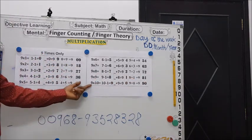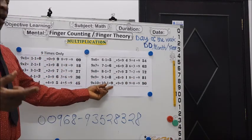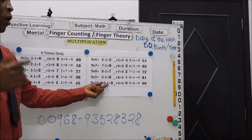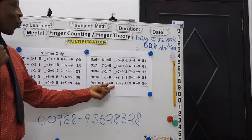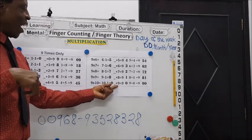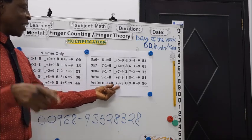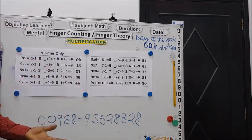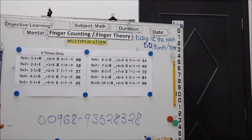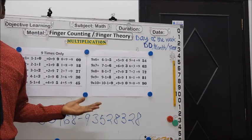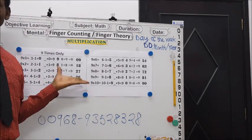And here 9 times 10: 10 take away 1 is 9. So what number should I add to 9 and then I'll get 9? That is 0. The answer is 90. It's very easy for even kids to absorb this.